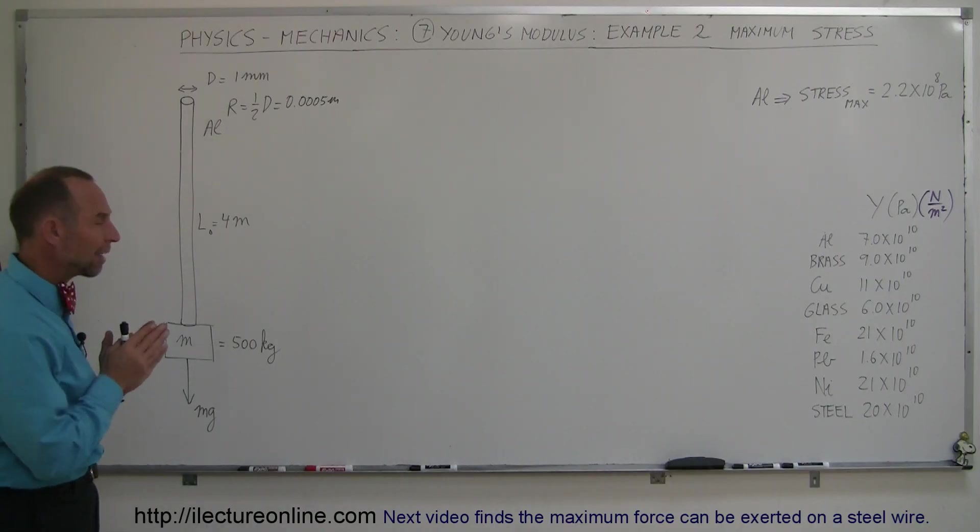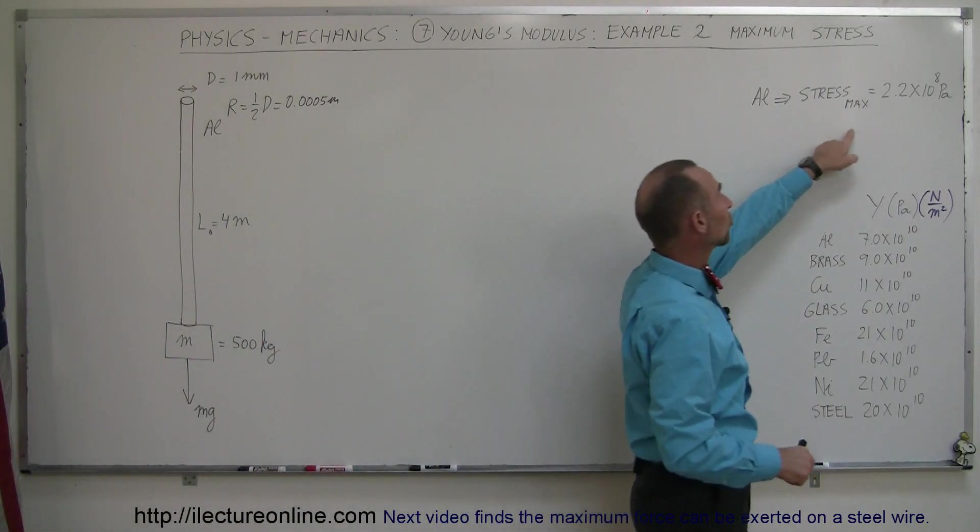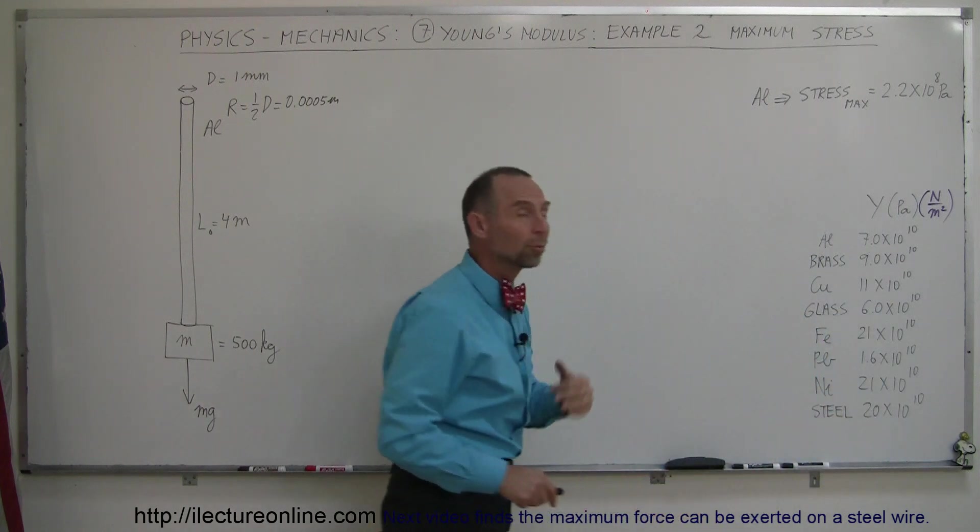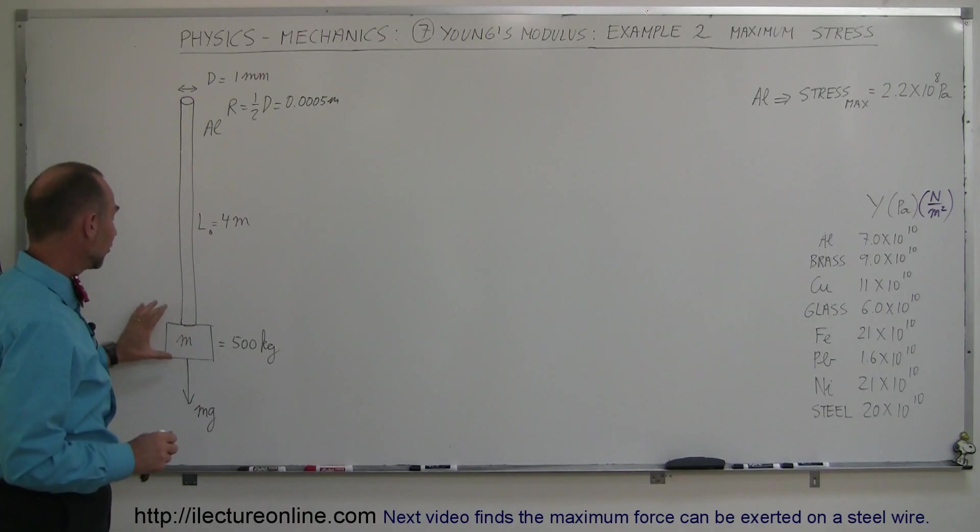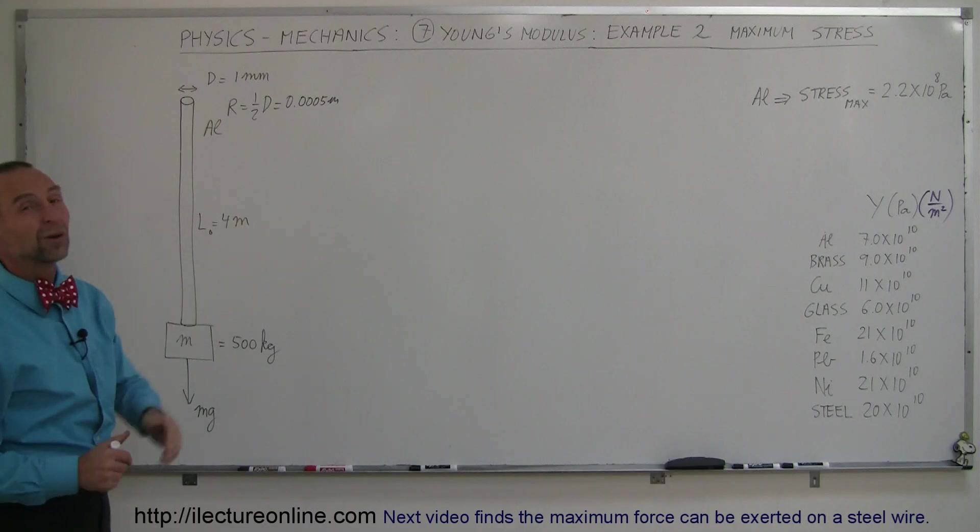Because every material has what we would call a maximum stress. And for aluminum, the maximum stress is 2.2 times 10 to the 8 pascals, or newtons per square meter. So, let's see if the stress that this mass would put on this wire exceeds the maximum stress. If it does, the wire will break.